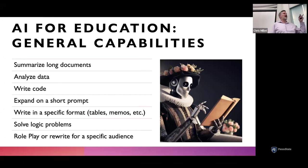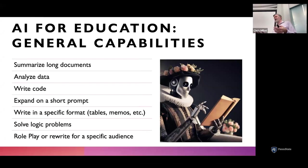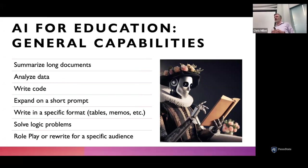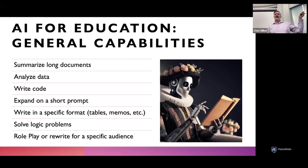Some people don't understand that generative AI can analyze data. I've done this in my own research — I uploaded a dataset and said 'conduct a regression analysis on this data and tell me anything interesting you find.' With just that as a prompt, it gave me all the right metrics, did the analysis, and said there seems to be a correlation between this independent variable and your dependent variable. It's stunning how quickly it does that.